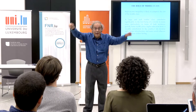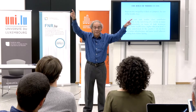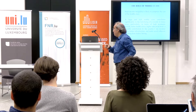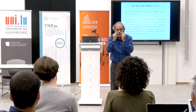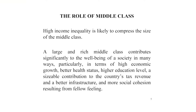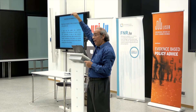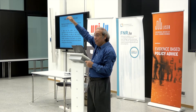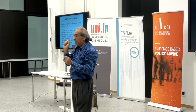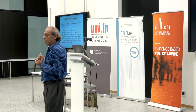The middle class is a neighborhood around the median income. If the middle class is concentrated just at the median income, then high income inequality compresses the size of the middle class, because high income inequality means richer people will have most of the income, so the size of the middle class will be pretty low.